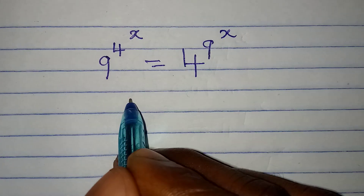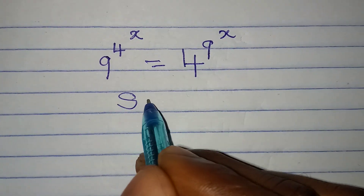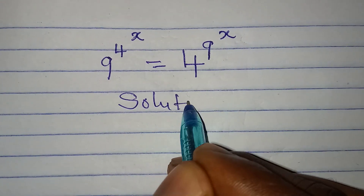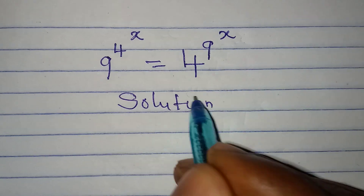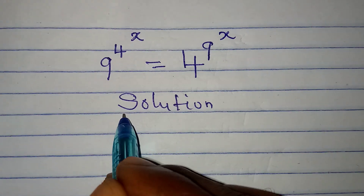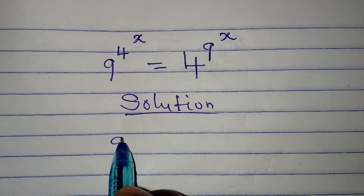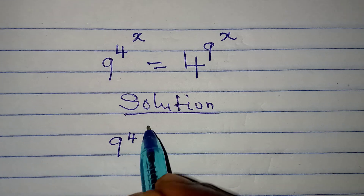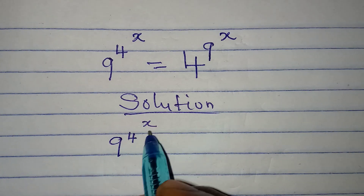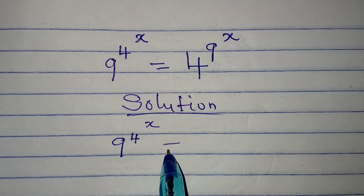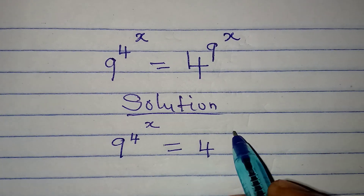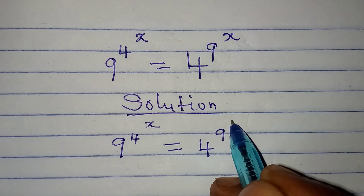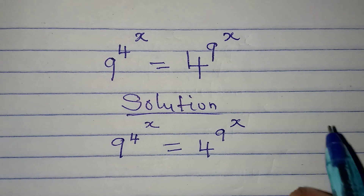Hello everyone. Let's solve this problem right away. We have 9 to the power of 4 to the power of x, equals 4 to the power of 9 to the power of x.